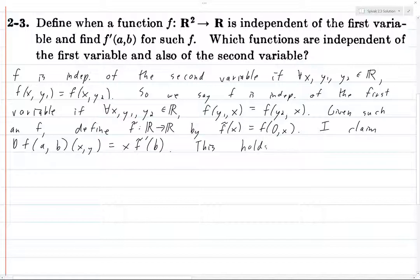This holds because we have the following. We take the limit as h comma k goes to 0. This is just h and k are both real numbers. We take the norm of f of A plus H